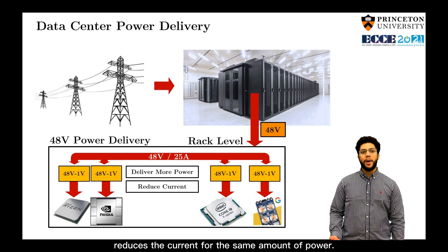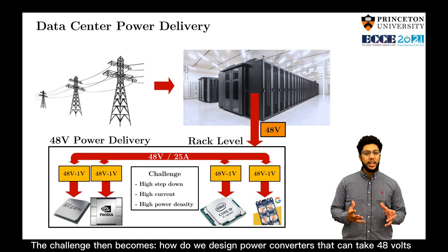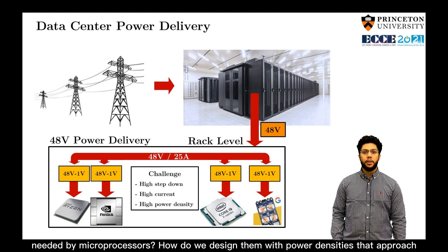So the challenge then becomes, how do we design power converters that can take 48 volts and step it down to deliver the low voltages and ultra-high currents needed by microprocessors? How do we design them with power densities that approach those of the processors themselves?